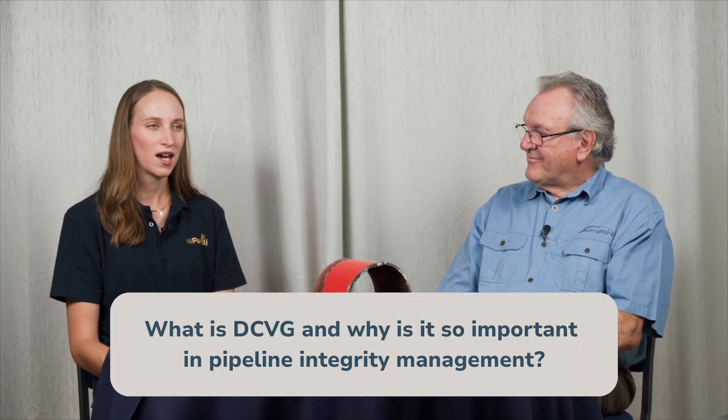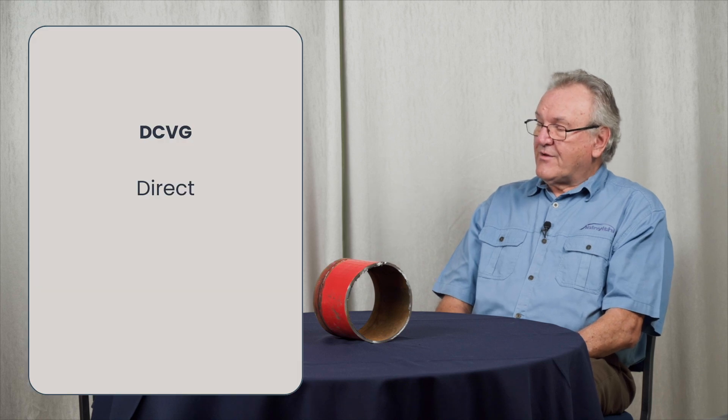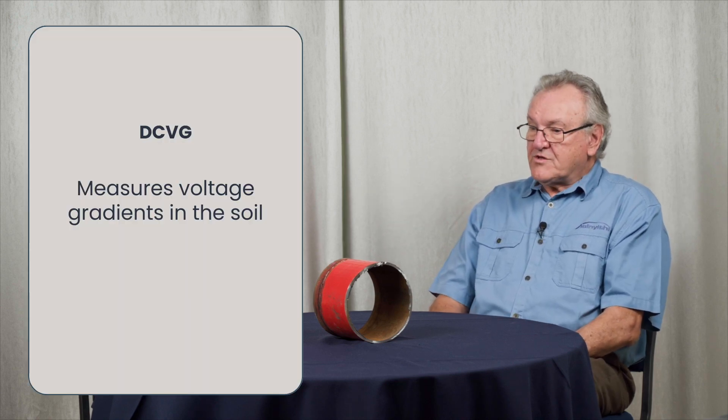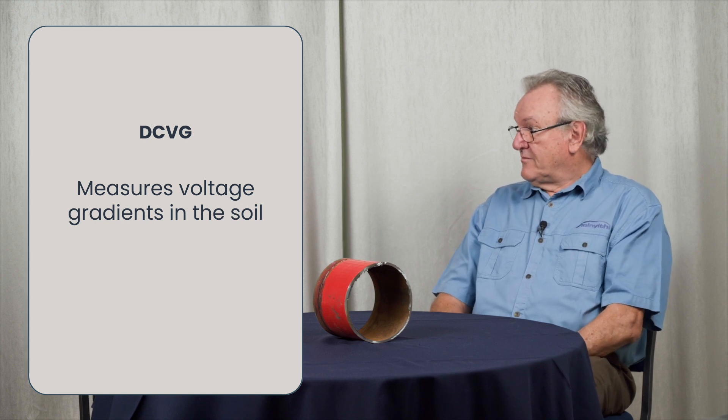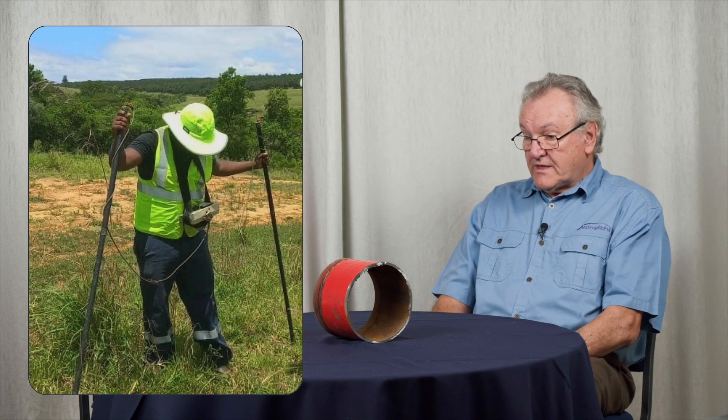I'm hoping that you will help us better understand what DCVG is, so let's dive straight in. Can you tell us what it stands for and why it's so important in pipeline integrity management? DCVG is a real mouthful — it's the Direct Current Voltage Gradient Survey. The DCVG survey measures voltage gradients in the soil, using two reference electrodes placed some distance apart to measure the potential difference between them.